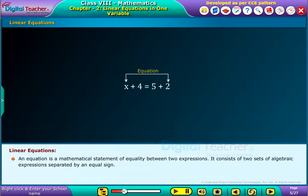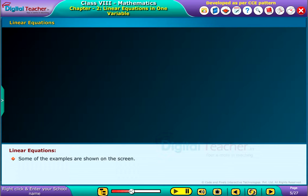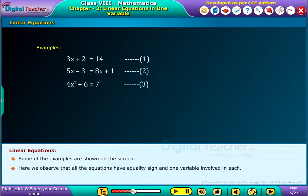An equation is a mathematical statement of equality between two expressions. It consists of two sets of algebraic expressions separated by an equal sign. This equality sign shows that the expression to the left of the sign, that is LHS, is equal to the expression to the right of the sign, that is RHS.